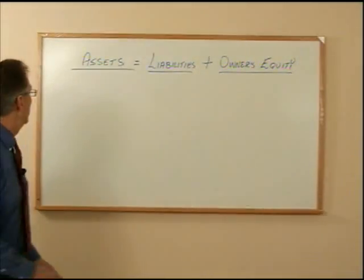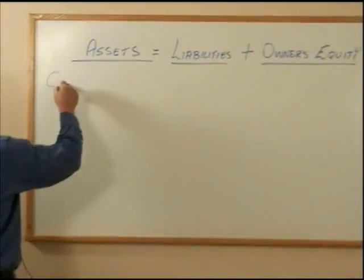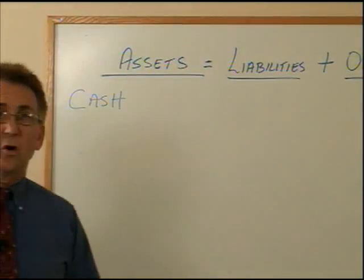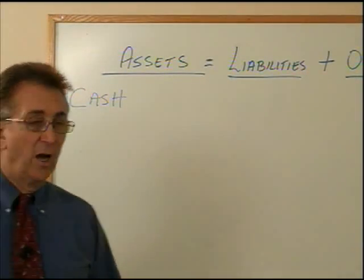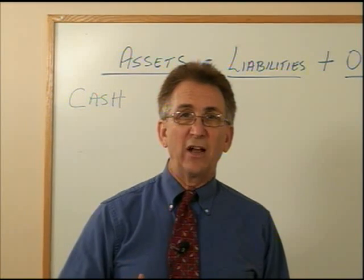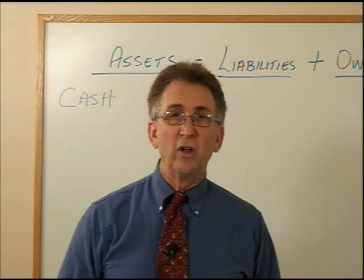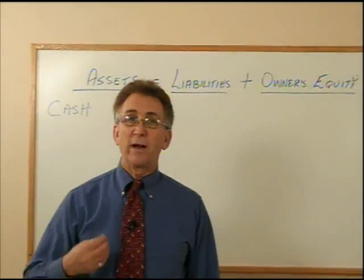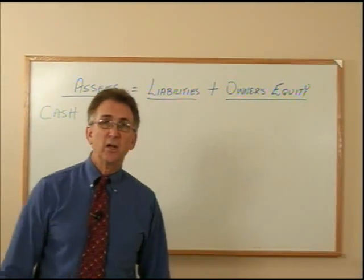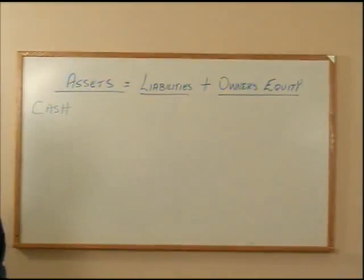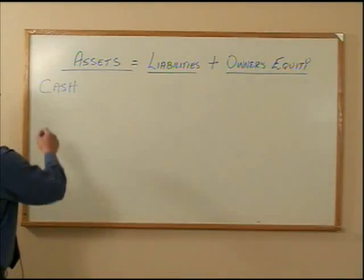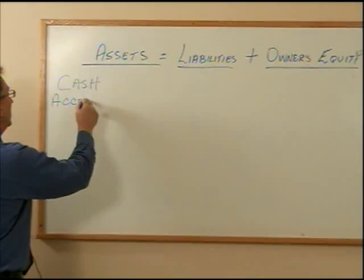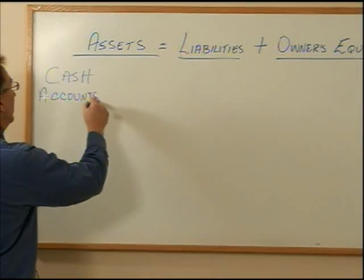Now the first asset we should know is cash. When we talk about assets, we're talking about the resources of a company. Assets are resources — things the company owns that make the company worth more. And of course, the more cash that a company has, the more their assets are. The second asset we need to be familiar with are called accounts receivable.